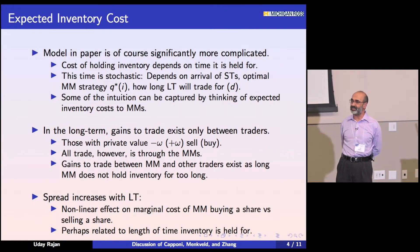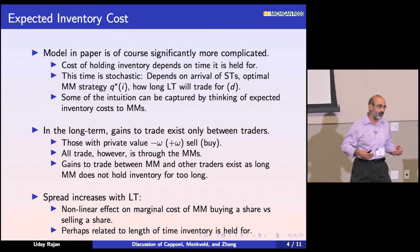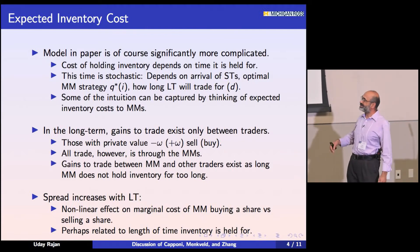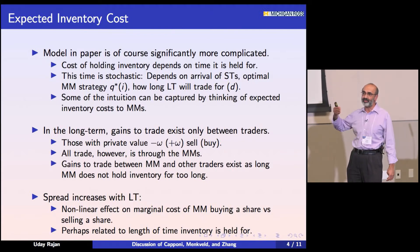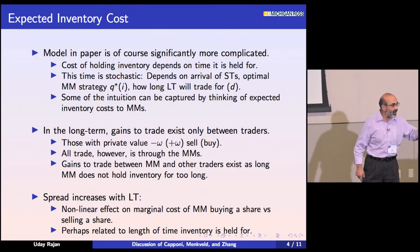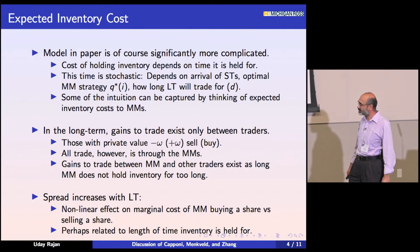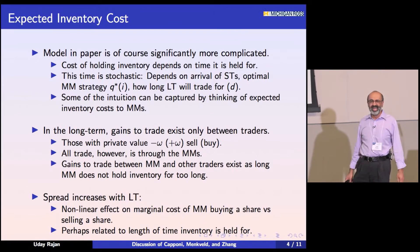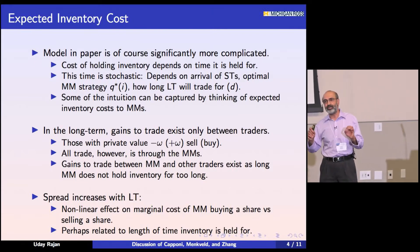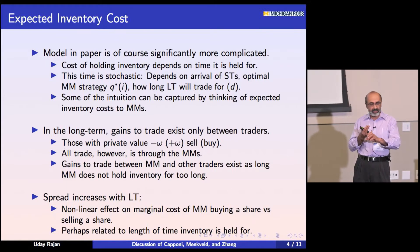That was a simple two-date model. Of course, the model in the paper is much more complex — the cost of holding inventory depends on how long I have to hold it for. How long do I have to hold it? It depends on the equilibrium of the game, on when these traders arrive, on the path that the market takes, and all of this is stochastic. It also depends on future strategies. Some of the intuition can be captured by thinking of the expected inventory cost the market maker faces when they're being asked to trade, which consists of two components: what is the size of the inventory right now, and the second component is how long will they expect to hold the shares they're buying right now.